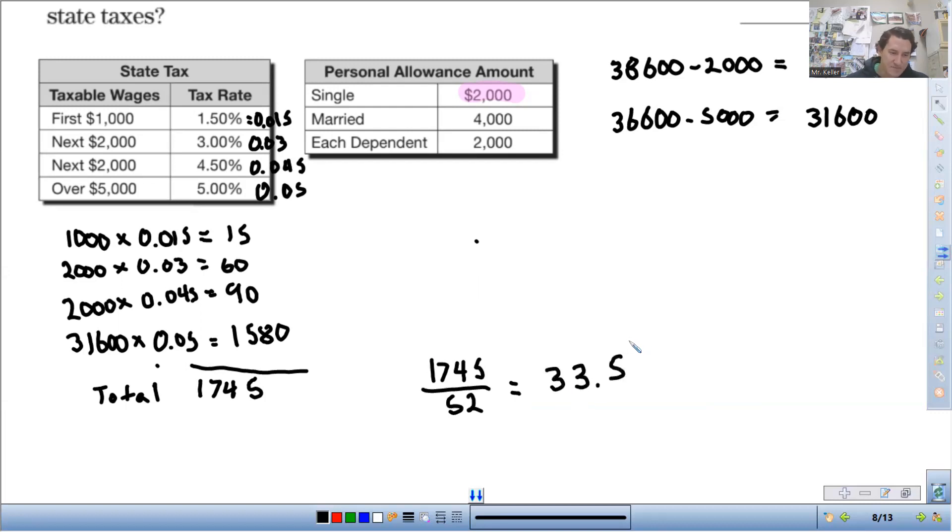We simplified that last part because only the deductions are going to be made once you get into the next higher bracket. But that's okay. Just as long as you understand that not all money that you earn is taxed at the same rate. So he's going to have about $33.56 deducted from his paycheck each weekly pay period. And that will do it for that. We'll see you guys next time.